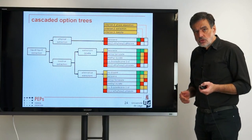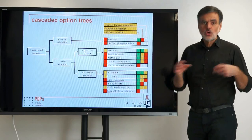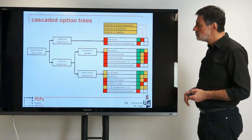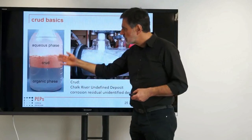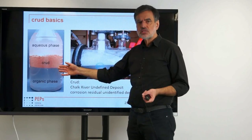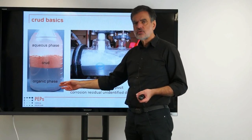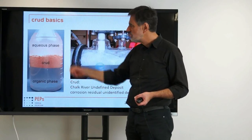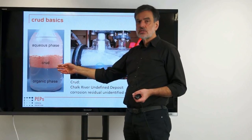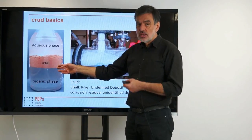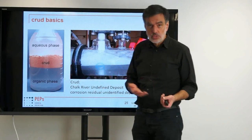In biotechnological processes where you extract something from fermentation broth, but also in other processes, it's quite frequent that so-called crud is produced. Crud is an intermediate layer that forms between two phases. In this industrial example, there is a heavy organic phase heavier than the aqueous phase, and this crud is a solid-stabilized emulsion — a so-called Pickering emulsion.